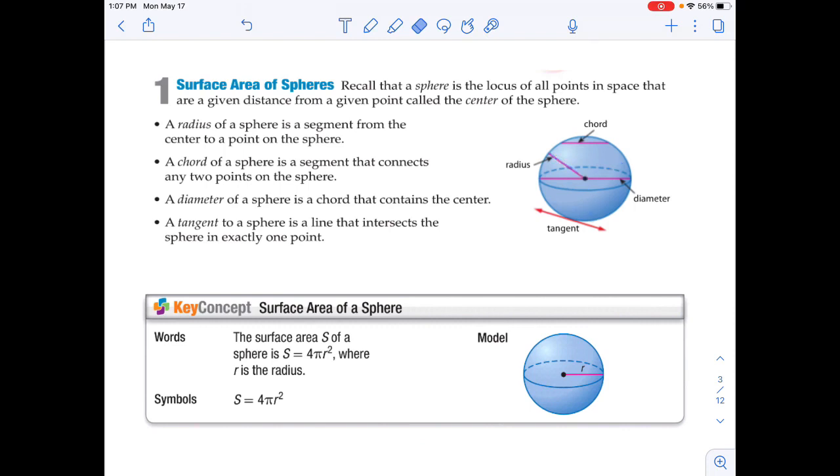A chord of a sphere is a segment that connects any two points on the sphere. A diameter of a sphere is a chord that contains the center, just like the diameter contains the center in a normal circle. A tangent to a sphere is a line that intersects the sphere in exactly one point.